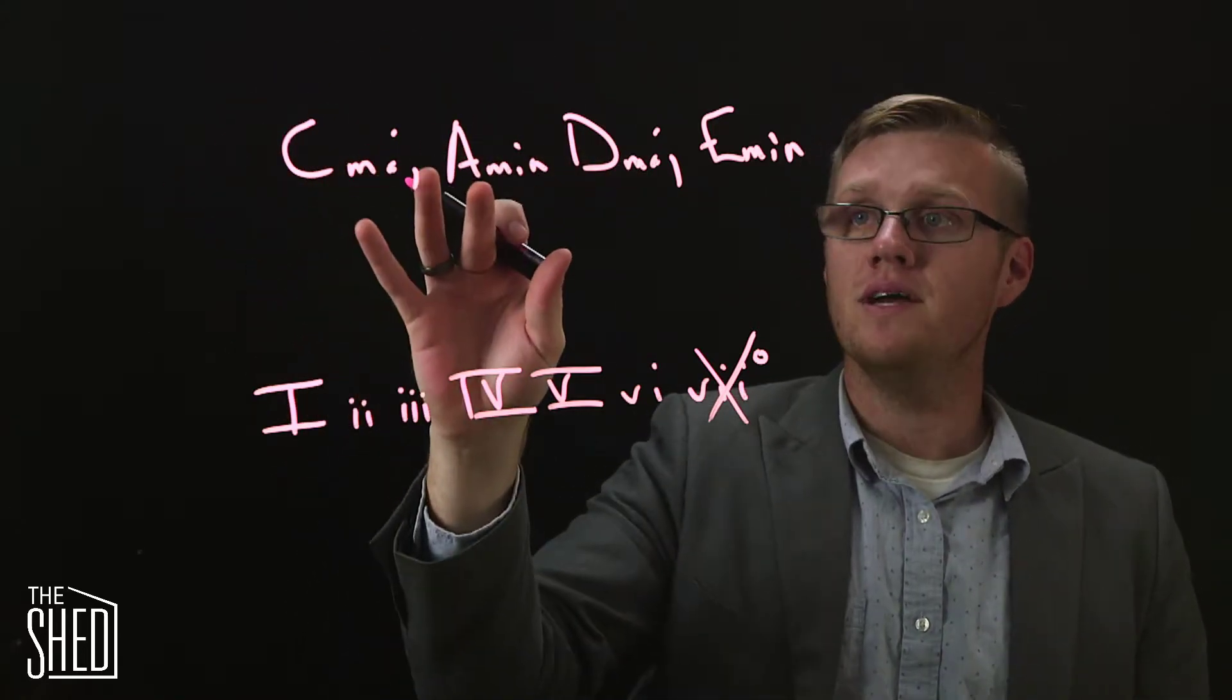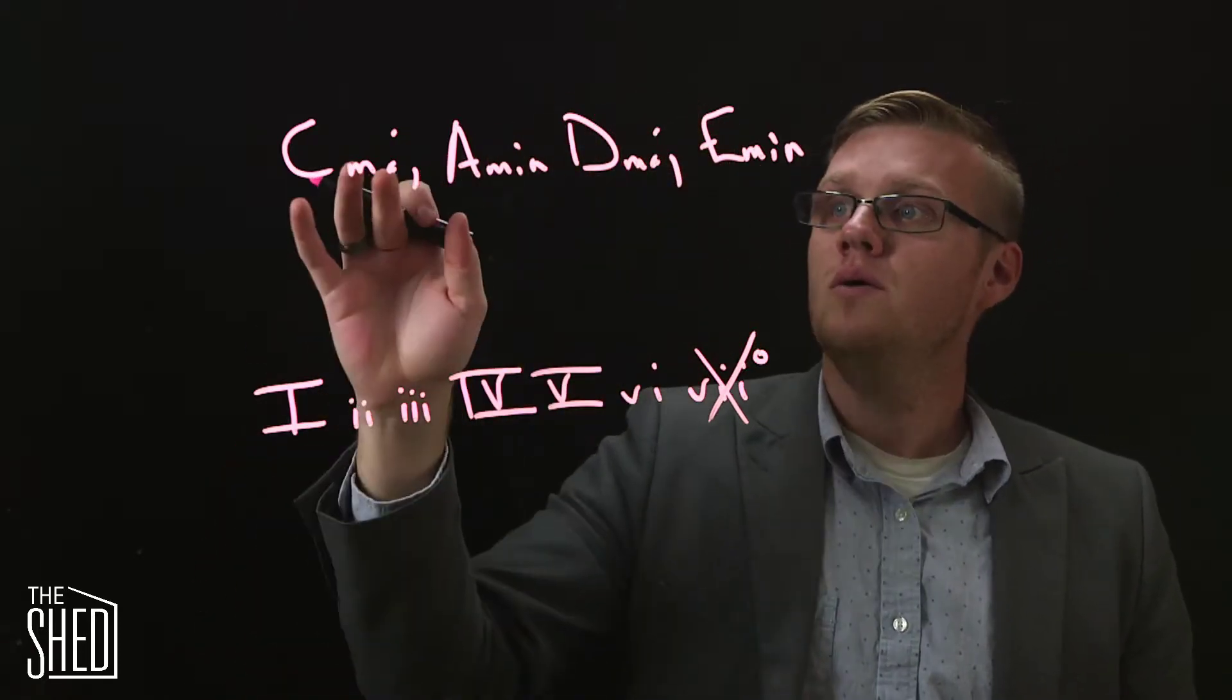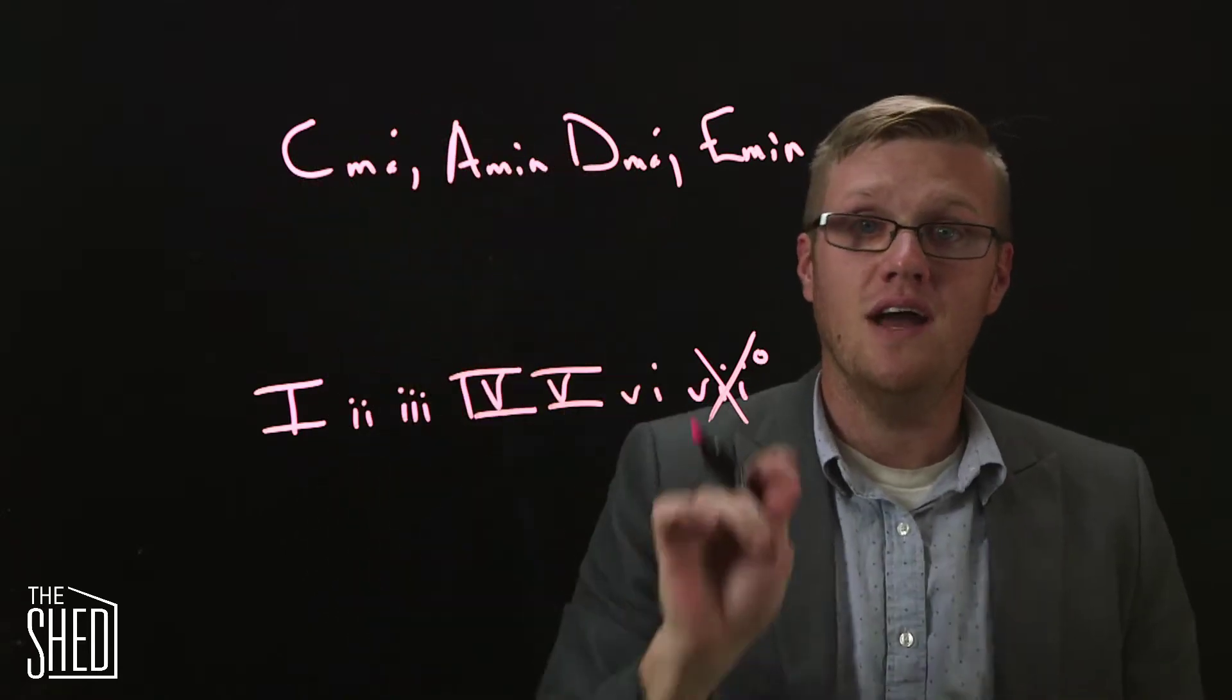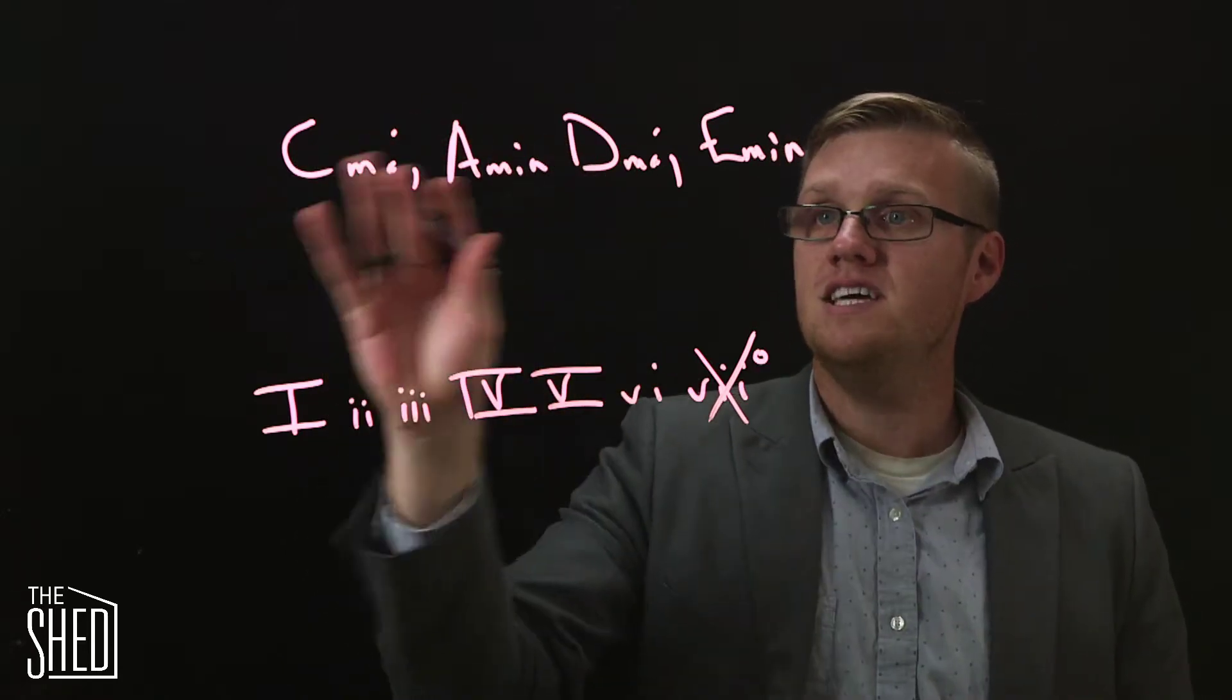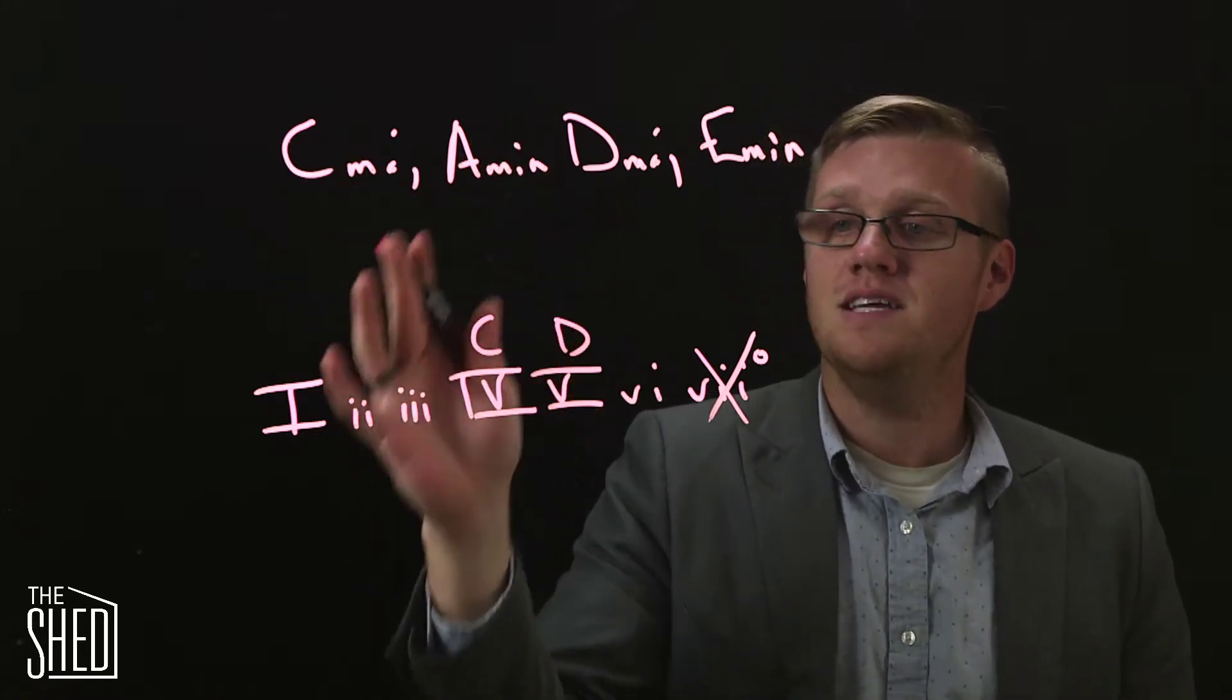So we have an A minor here and we have an E minor. They are not next to each other in the musical alphabet, so that's not going to help us. We have a C major and a D major, and those are next to each other. C is before D in the musical alphabet, so it's going to go here. D is going to go here, C major and D major.